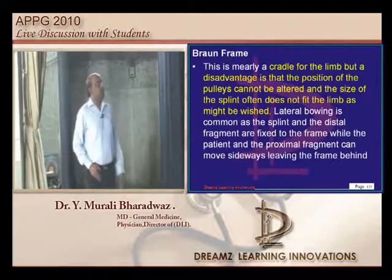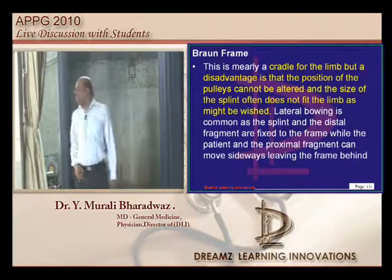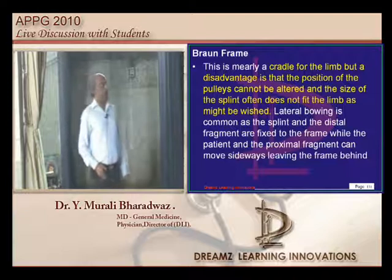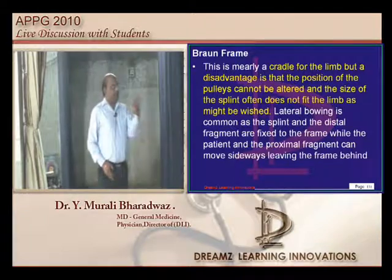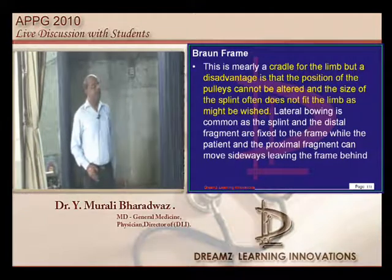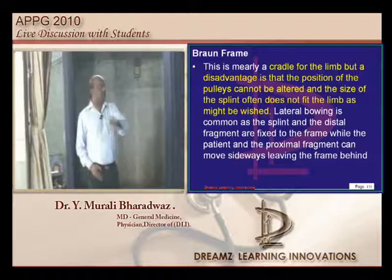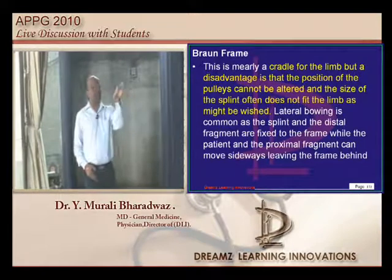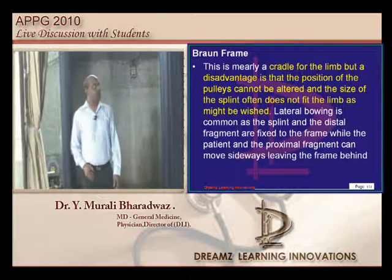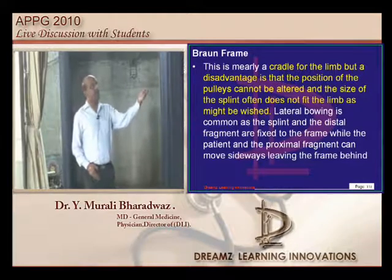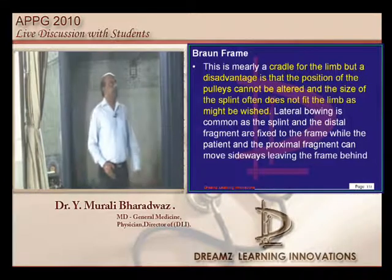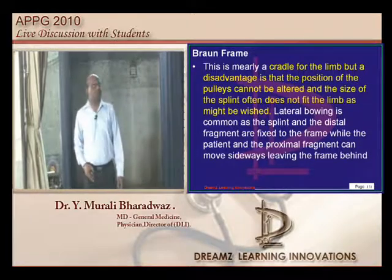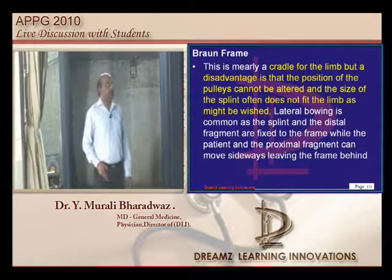One of the options was the Böhler frame. The Böhler frame is a cradle for the limb, but a disadvantage is that the position of the pulleys cannot be altered and the size of the splint does not fit the limb. These are the limitations of the Böhler splint. Continuous fixed traction using a Thomas splint is what needs to be remembered.